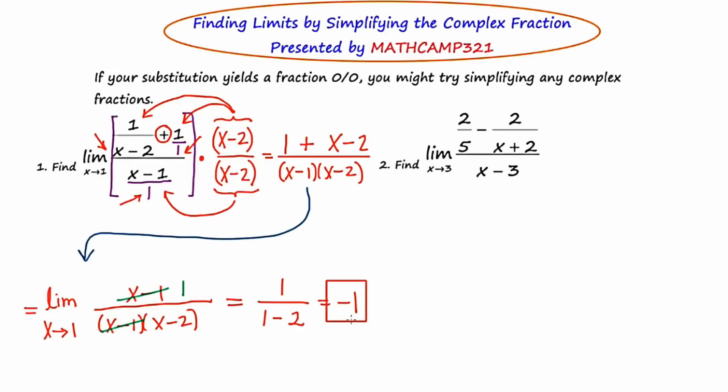Okay, let's go to number 2. Find the limit as x approaches 3 of this other big complex fraction. So our first line of defense should be to plug in 3 for every occurrence of x. Maybe it'll work out on the first try and we'll be done. So I start with 2/5 on the top left. I'm going to subtract from that 2 in the numerator. And then 3 plus 2 is 5. And then this is all over x minus 3 or 3 minus 3. So it looks like, again, we've got a situation where we've got 0/0.